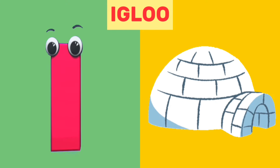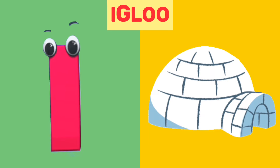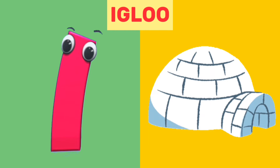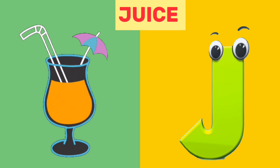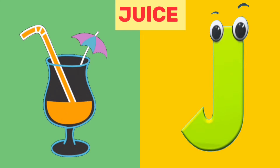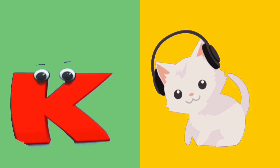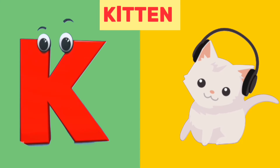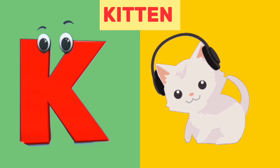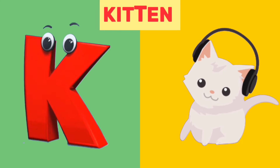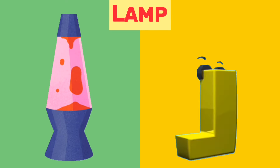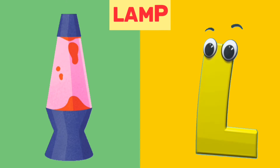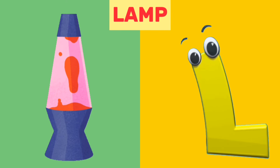I is for igloo, i, igloo. J is for juice, j, juice. K is for kitten, k, kitten. L is for lamp, l, lamp.